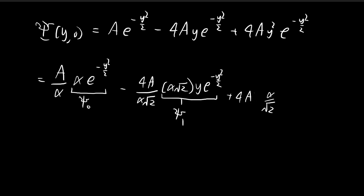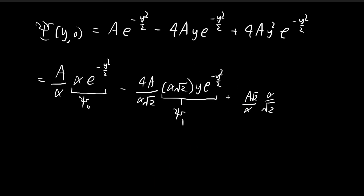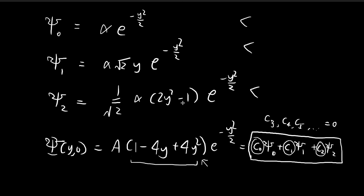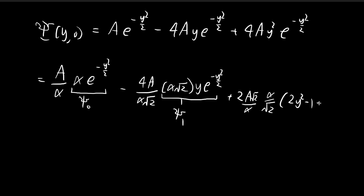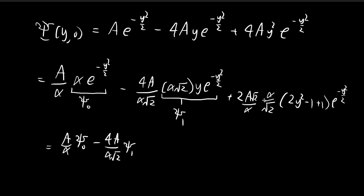For the third term, ψ₂ involves α/√2. I supply a factor of α/√2 and cancel it with √2/α. The 4y² term: I absorb one factor of 2 into the 4, making it 2 · (2y²). Apart from the 2y² term there is also a −1, so I add and subtract 1: the (2y² − 1) · e^(−y²/2) term matches ψ₂, and the +1 · e^(−y²/2) remainder gives a contribution to ψ₀.